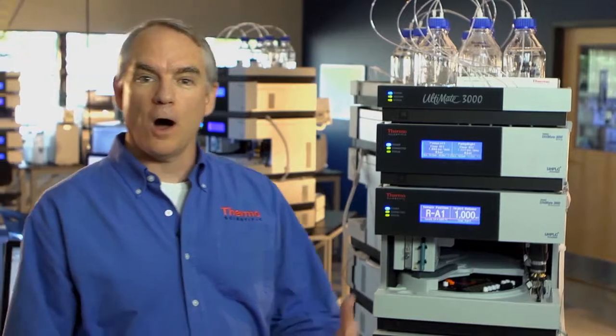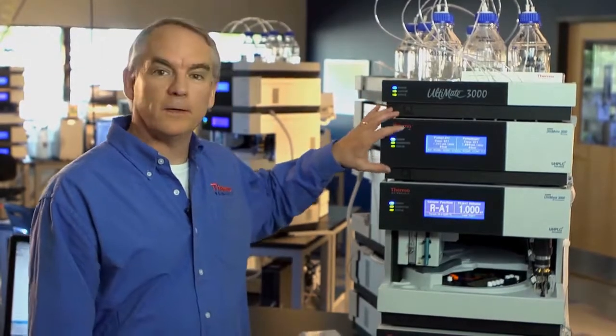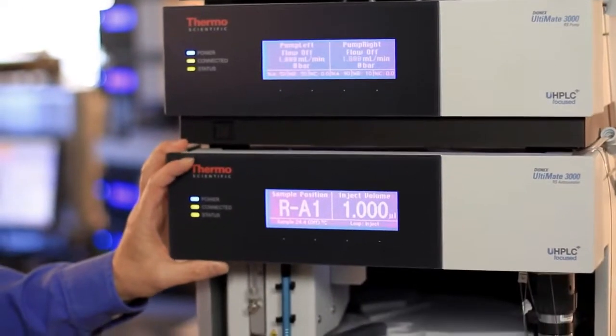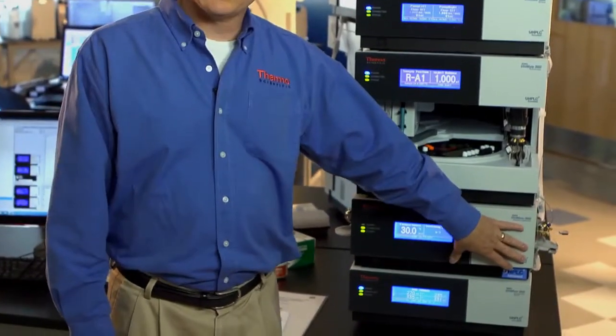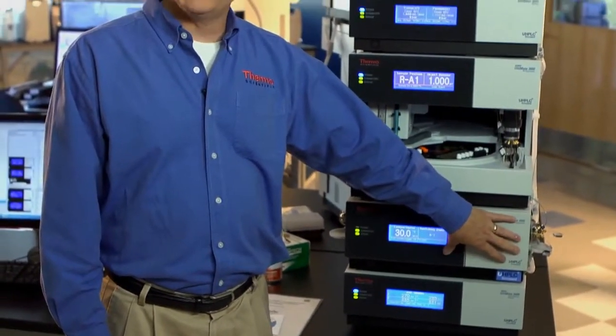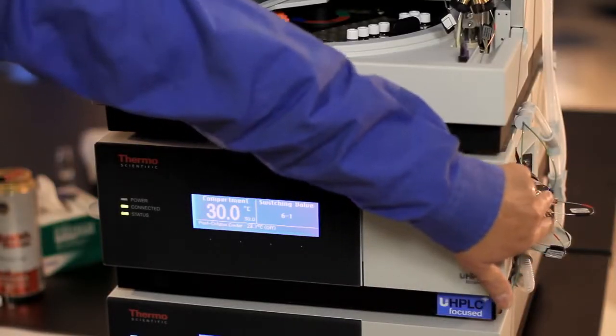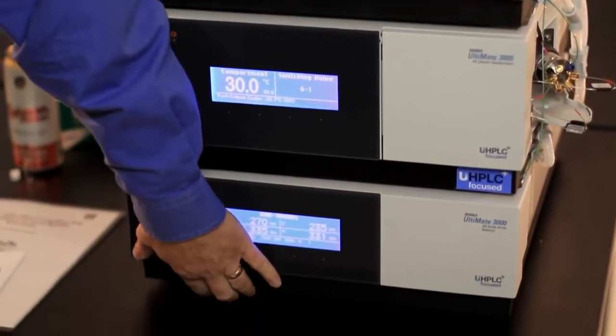The system that we're going to implement online solid phase extraction on is the Ultimate 3000 UHPLC Plus system. This is a system that includes a dual gradient pump, a split loop well plate sampler, a thermostated column compartment, and within here as I'll show you later we have the two different column chemistries, and we have a six port two position switch right on the side that allows us to do column switching for the online solid phase extraction. Finally we have a stackable detector at the bottom.